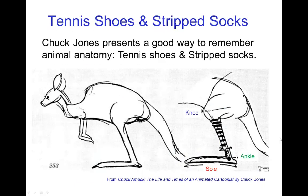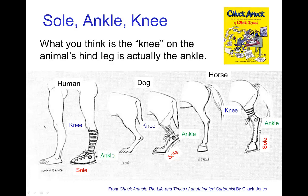Chuck Jones presents a nice way of remembering these different anatomical forms for animals, which is to imagine dressing the animal in tennis shoes and striped socks. Here we have the tennis shoe and striped socks with the top of the sock at the knee and the top of the tennis shoe at the ankle. For a dog, the tennis shoe would stretch all the way up half the leg, and the top of the sock would be actually close to the body — and even more extreme with the horse. It's a wonderful book, so I do suggest you check that out.